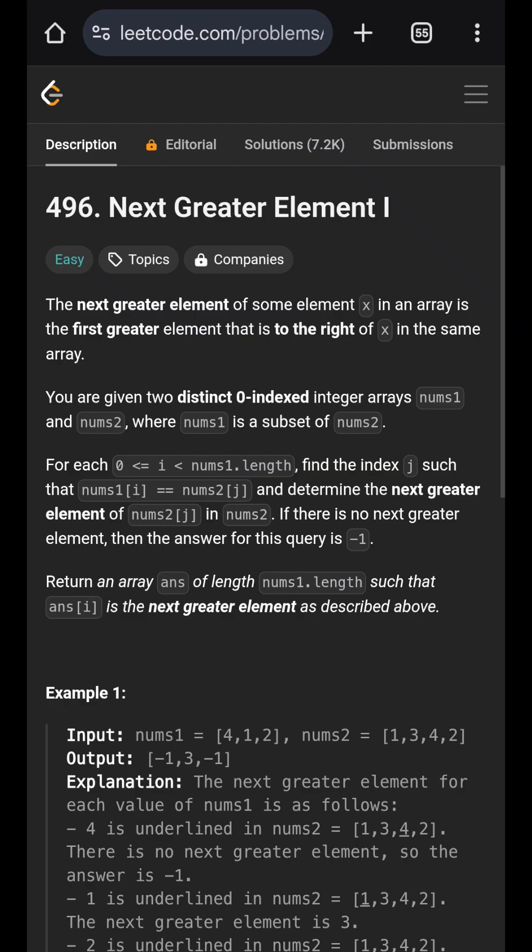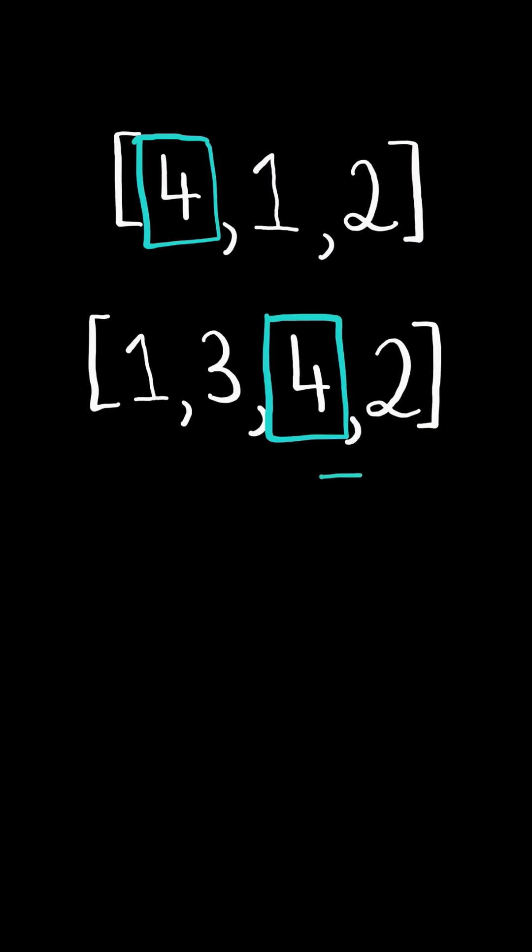Next greater element 1. Find the next greater element to the right of the number in list 2. If there is no greater element, we return negative 1.